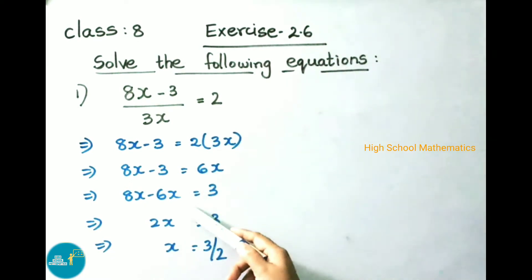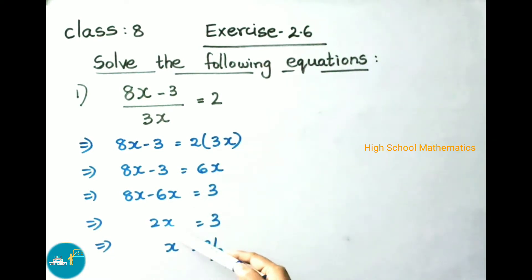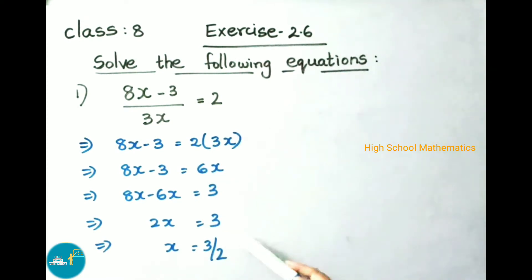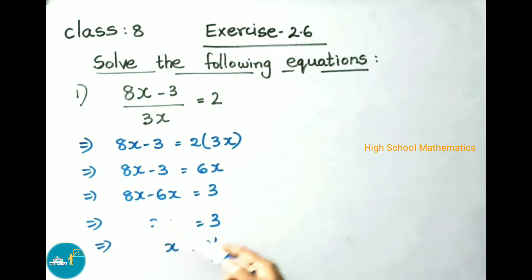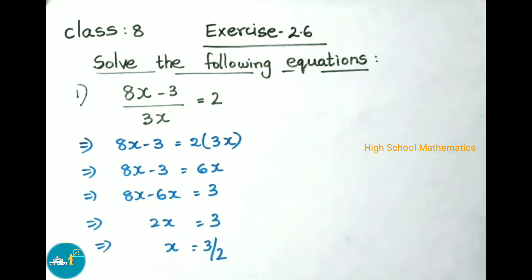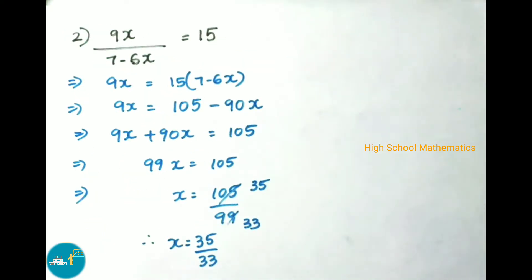8x - 6x = 2x = 3. Now we have to find the x value. So x = 3/2. Here 2 is going to multiply, on transposing it is divided by. Therefore x = 3/2. See now question number 2.